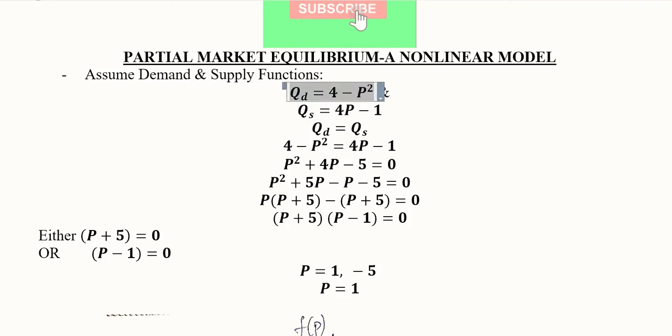Qd, that is the demand function, is non-linear—that is, quadratic—whereas the supply function is still considered to be linear. We can also consider that the supply function is quadratic, cubic, or any other non-linear form. This is also possible, but for the sake of convenience, we have kept it in a simple form.